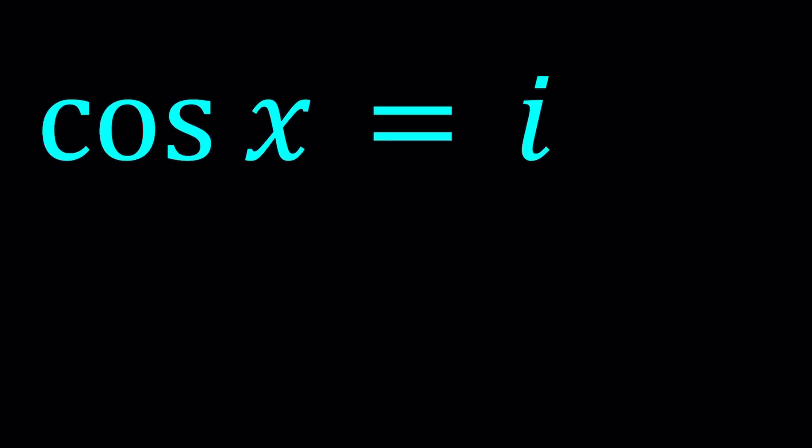So we have cosine x equals i and we're going to be looking for x values. Now let's see how we can approach this problem. First of all notice that the cosine of an angle is complex. So you're thinking x is probably complex too, right? Can x be real? Probably not. Anyway, to be able to solve this problem we're going to be using a very nice identity by Euler. Obviously Euler is one of the greatest mathematicians, maybe the greatest.